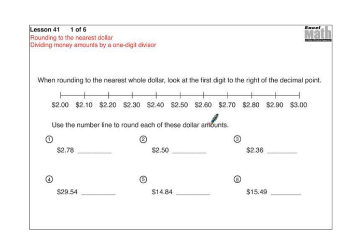When rounding to the nearest whole dollar, look at the first digit to the right of the decimal point. That means when I'm rounding this number here, I'm going to look at the number that's in the tenths place, right to the right side of that decimal point. In this case, it's a seven.